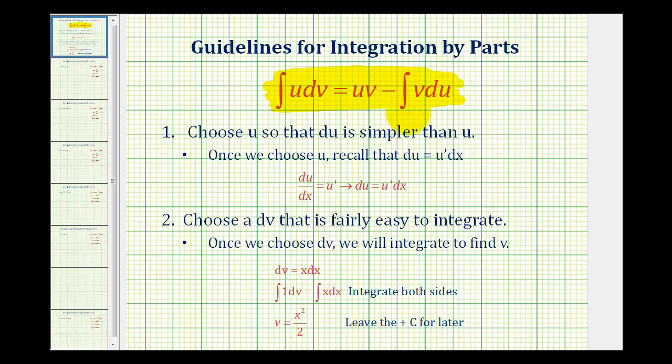And this actually comes from the product rule. So from the given integral, we need to identify what part we're going to let equal u, and what part we'll let equal dv. Whichever part we let equal u, we'll have to determine differential u, and whatever part we let equal dv, we'll have to integrate to determine v.